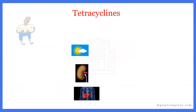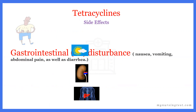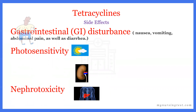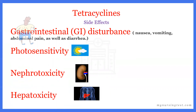Side effects of tetracycline include GI disturbance — nausea, vomiting, anorexia, and diarrhea, as anything given orally has the ability to cause GI disturbance. With tetracyclines specifically, we also have photosensitivity, nephrotoxicity, and hepatotoxicity. We're going to go into each of these side effects in a little detail.